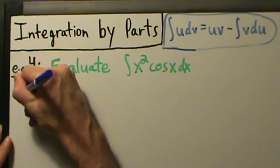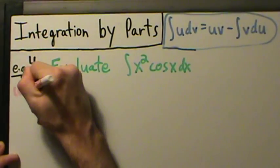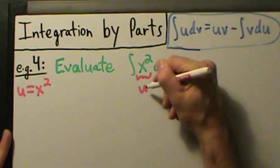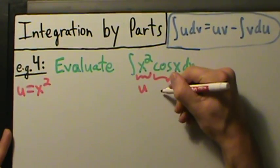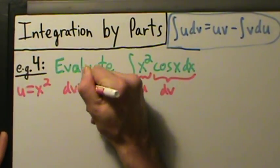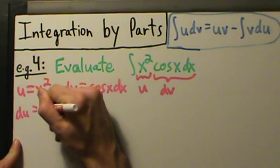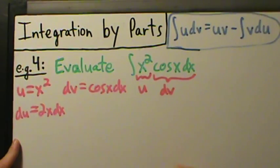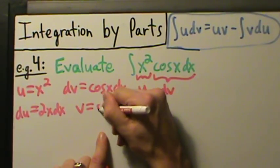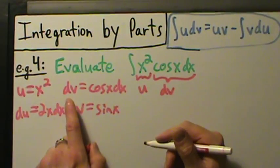So let u equal x squared — that's our algebraic function. Then dv is forced to be everything else, so dv equals cosine of x dx. Since u is x squared, then du is 2x dx. Since dv is cosine of x dx, we integrate to get v, which is sine of x. Remember, there is no arbitrary constant on v when doing integration by parts.